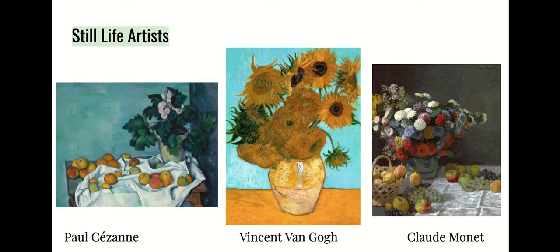Some famous still life artists I want you to look at are Paul Cézanne, Vincent van Gogh, and Claude Monet. These three artists really enjoyed painting or drawing plants and food objects. They were interested in how to portray still lifes in an interesting way, showing lots of lights and darks, and they chose very basic, random objects for their still lifes.